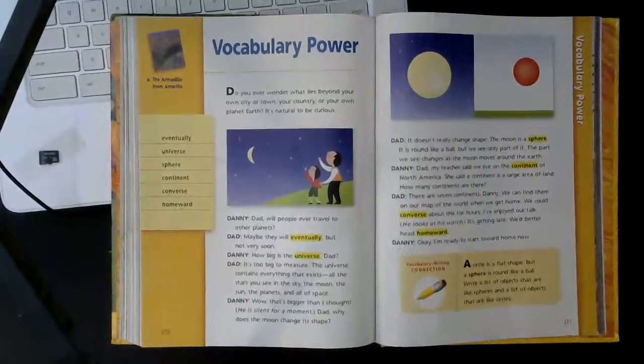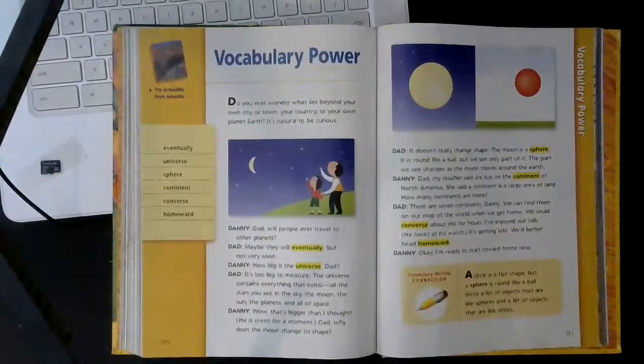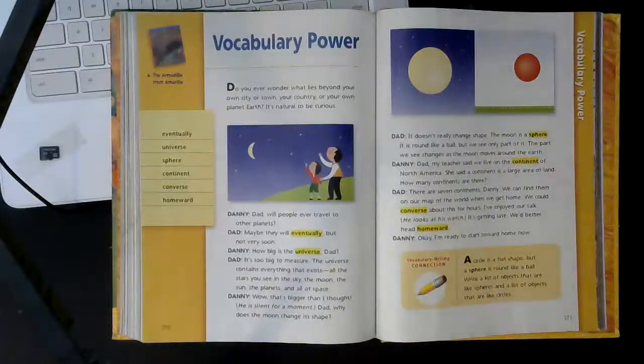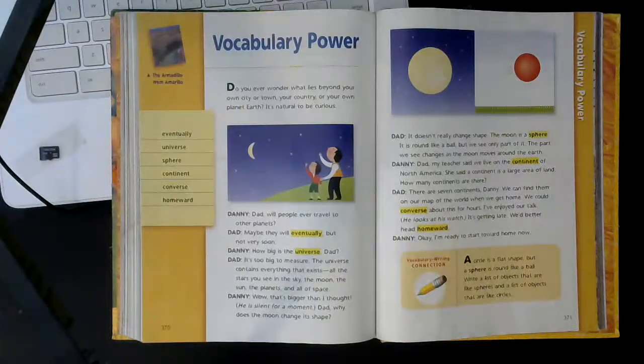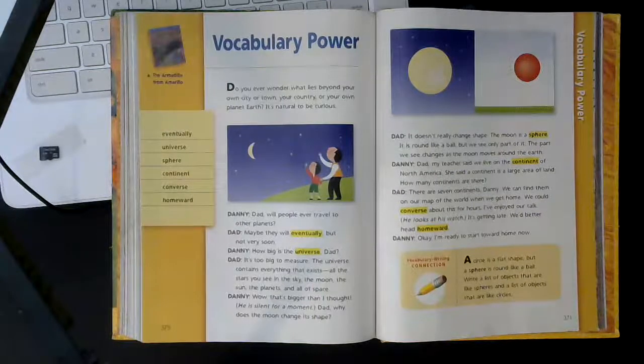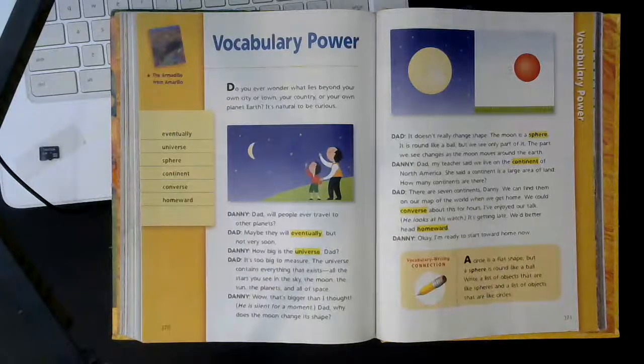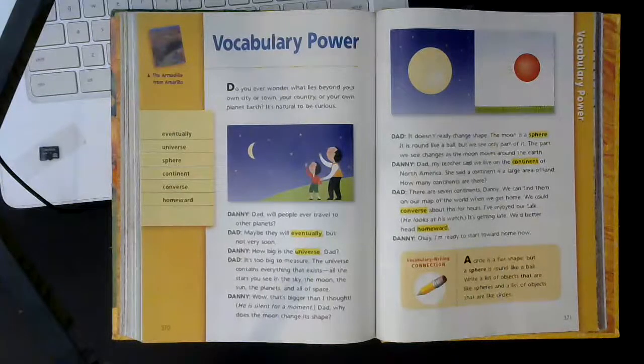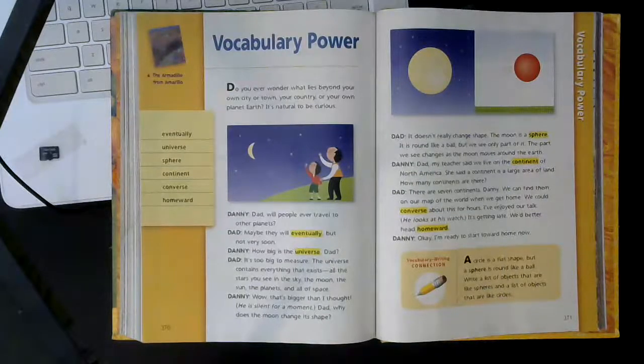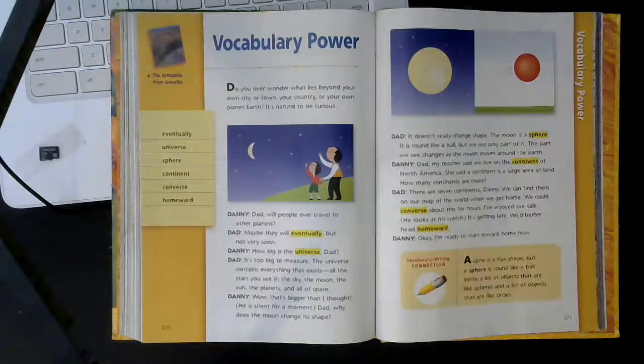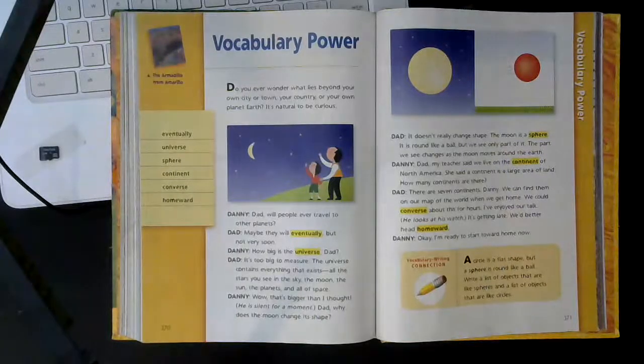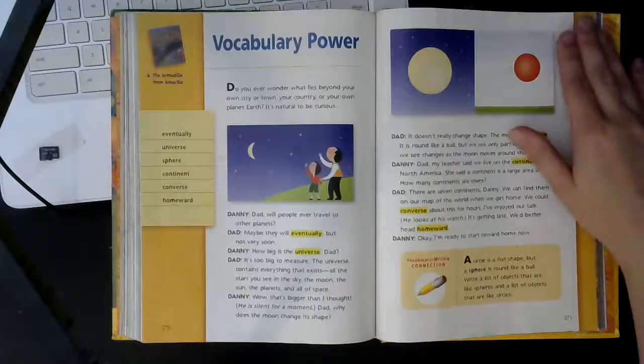I want to discuss the vocabulary because we will be using these later in the week in our reading workbook. The words for this story are eventually, universe, sphere, continent, converse, and homeward. So eventually is an adverb. It means at some point something will happen. Universe is where we live in the Milky Way galaxy and beyond. A sphere is a ball. Continent is a large area of land. To converse is to talk. And homeward is to head home.